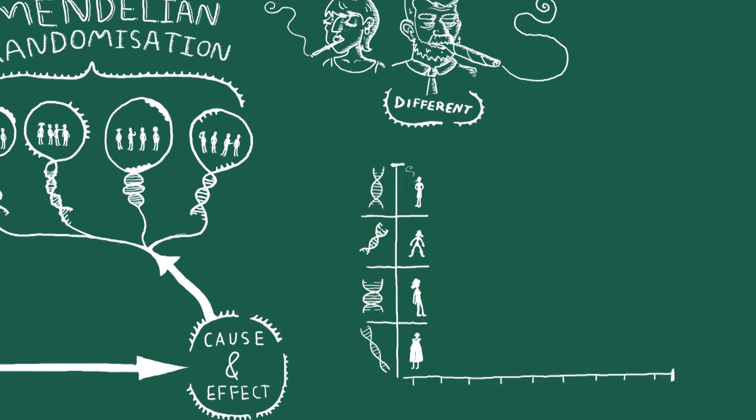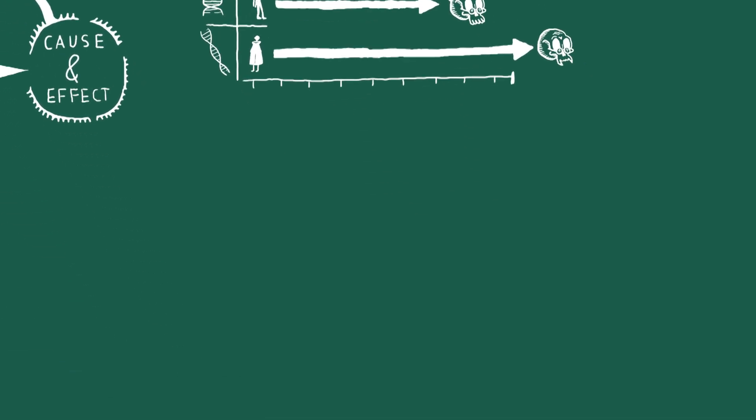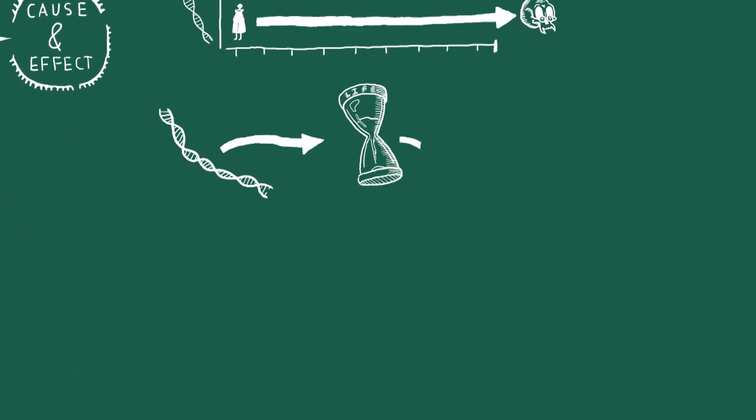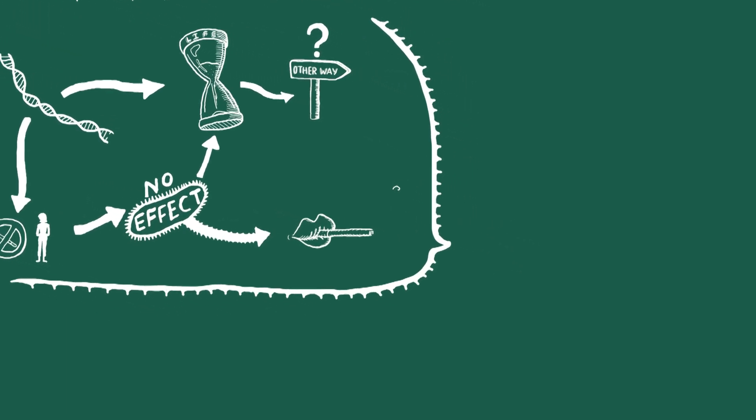When we group people according to which version of this gene they have, we find that the people with the version of the gene associated with heavier smoking do indeed die younger. But is the gene influencing how long we live in some other way? We don't think so. When we look at the same gene in non-smokers, there's no effect on life expectancy, so the effect must be driven by smoking.